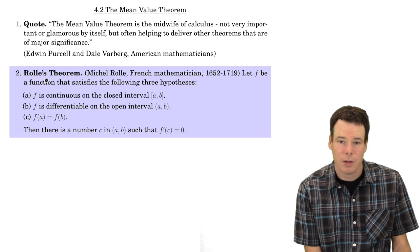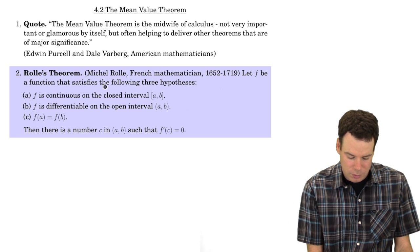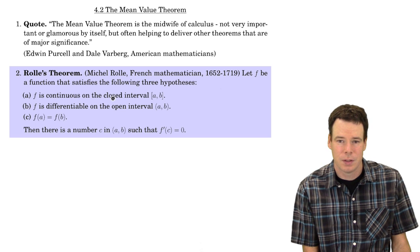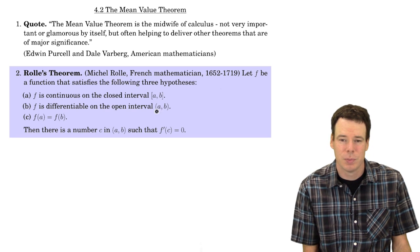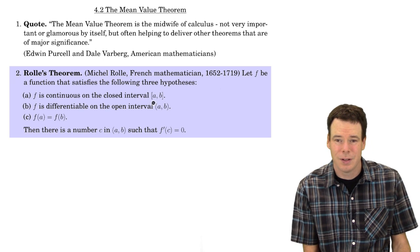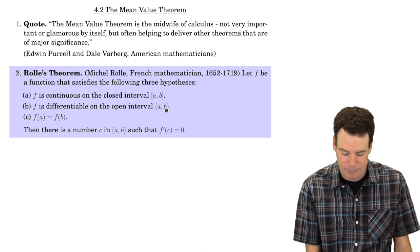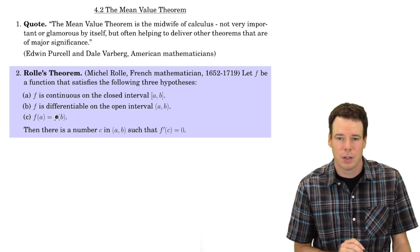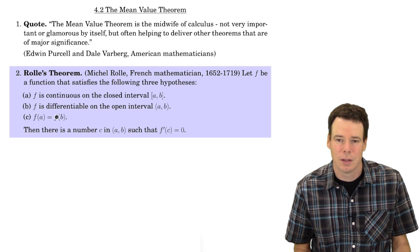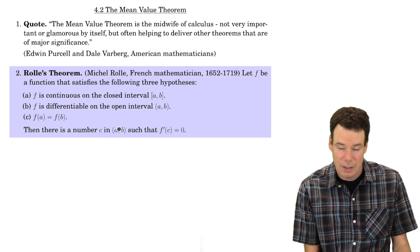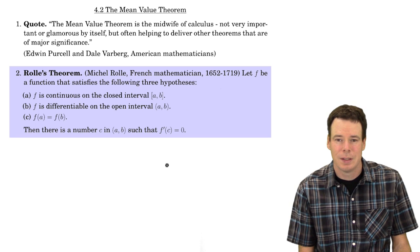A special case of the mean value theorem is known as Rolle's theorem. Rolle's theorem says: suppose we start with a function f that satisfies three conditions. We know that it's continuous on a closed interval [a, b], differentiable on the open interval (a, b) — so continuous on the closed interval and differentiable except possibly at the endpoints — and further that the values of the function at the two endpoints are equal to each other. Then we can conclude that there has to be some value c in the interval (a, b) for which the derivative is zero.